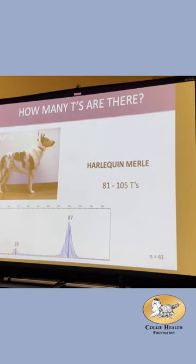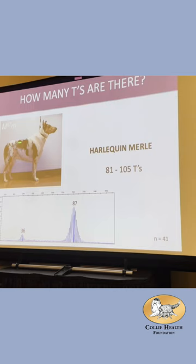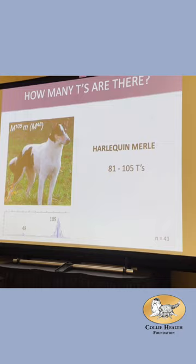For harlequin dogs, we had 41 in our study, and they had 81 to a whopping 105 T's. So they're on the far end of the spectrum. Moose here has an intermediate phenotype, and this dog with 105 T's is crisp: black and white. As we increase the number of T's, we decrease the amount of good protein produced. The bigger the insertion, the more we splice wrong and make bad protein.